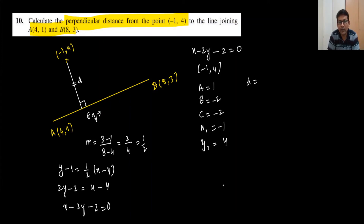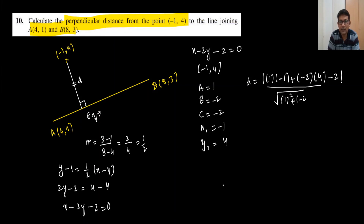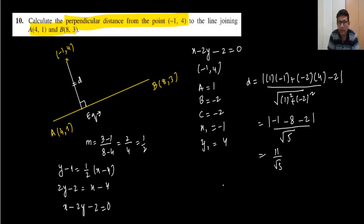The external point coordinates are x1 equals minus 1 and y1 equals 4. Substituting into the distance formula: distance equals the modulus of 1 times minus 1, plus minus 2 times 4, plus minus 2, divided by the square root of 1 squared plus 2 squared. This gives the modulus of minus 1 minus 8 minus 2, which is minus 11, over the square root of 5. Taking the modulus gives 11, so the distance is 11 over root 5. Rationalizing gives 11 root 5 divided by 5 units.